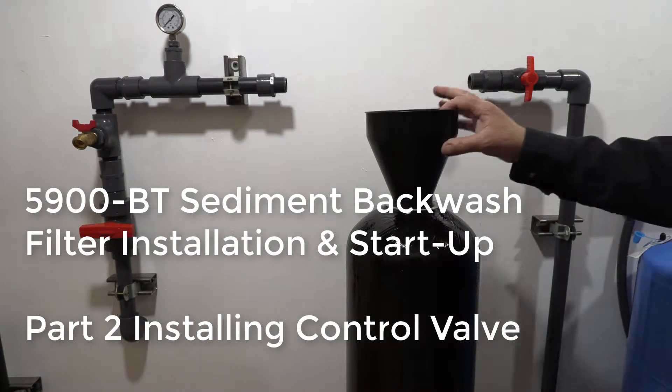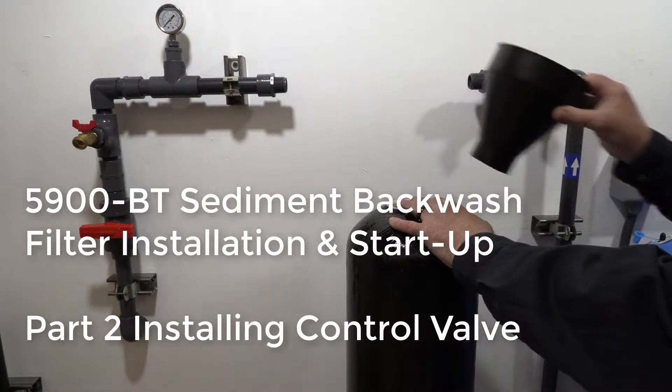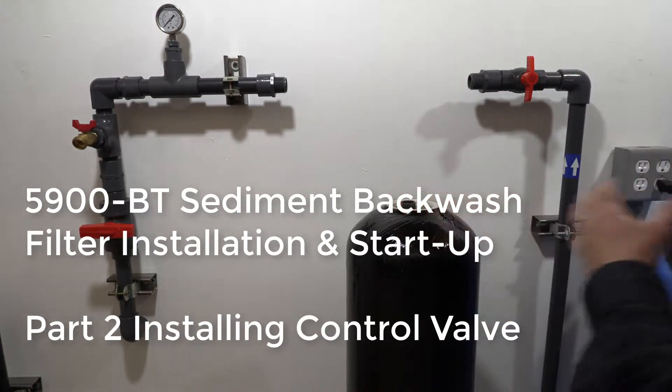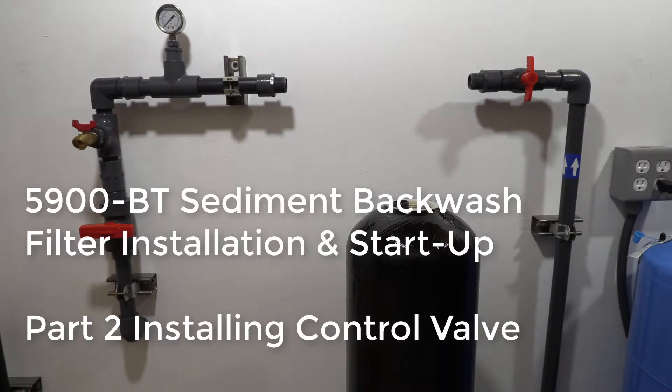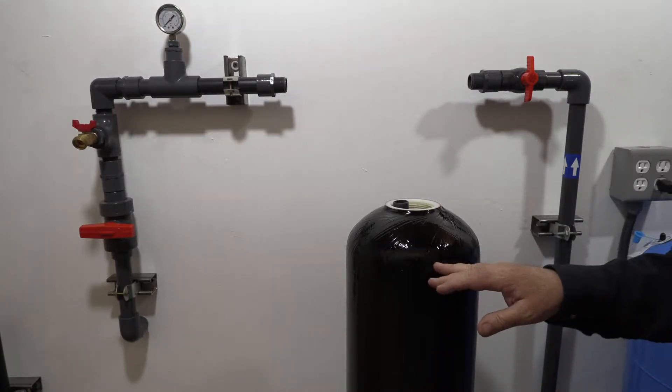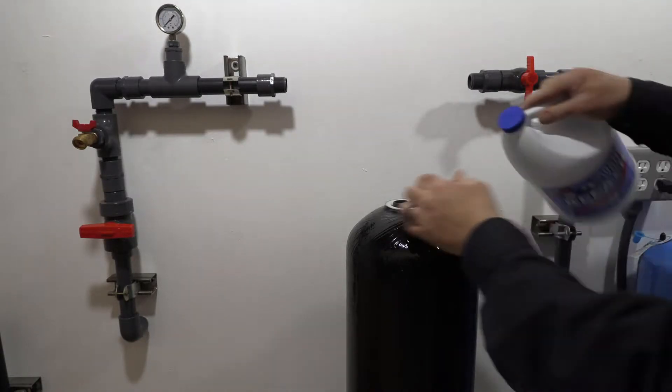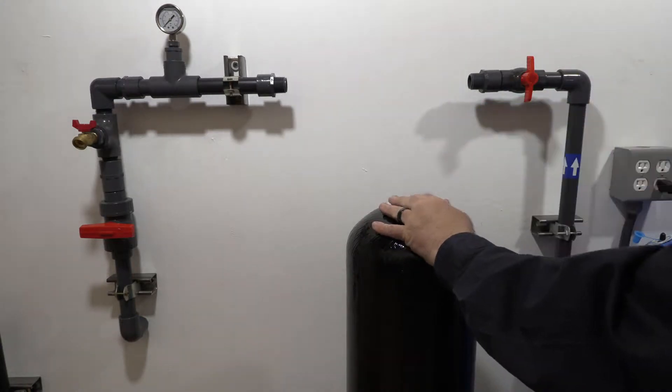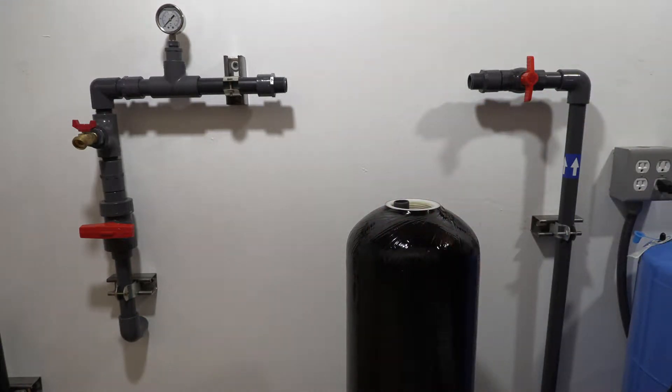Now that we have our media installed, carefully remove the funnel, not pulling the D-tube out of the cylinder. Fill your cylinder with water, pour a cup of regular household bleach down the D-tube, and let that set for at least one hour up to 24 hours.